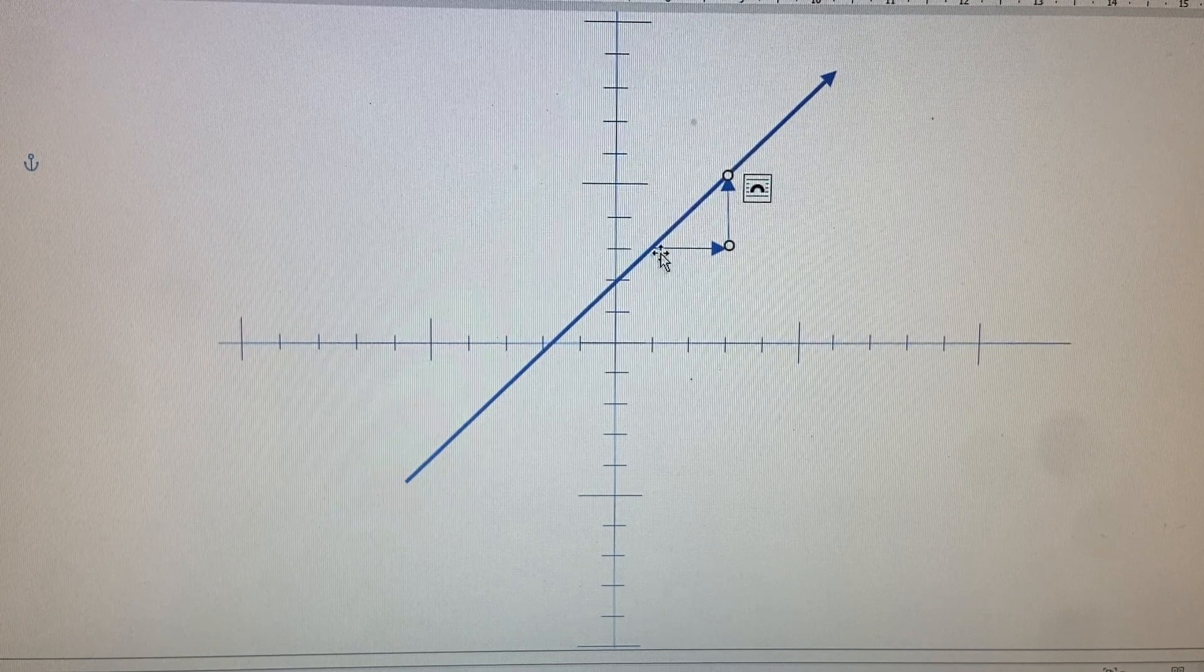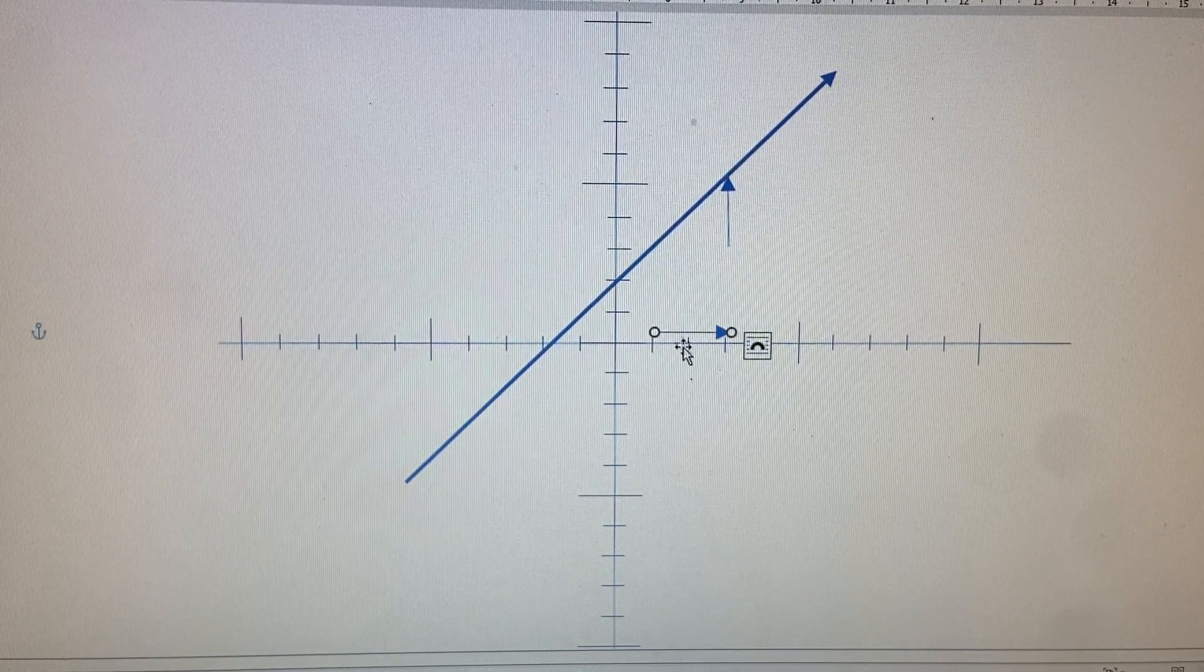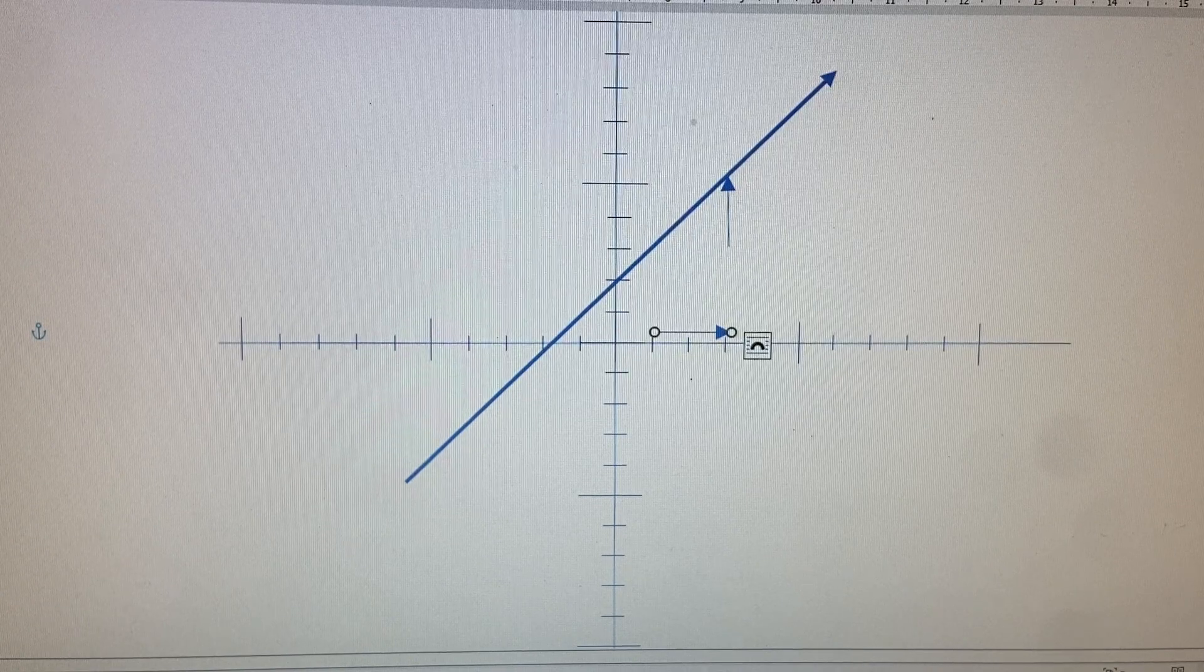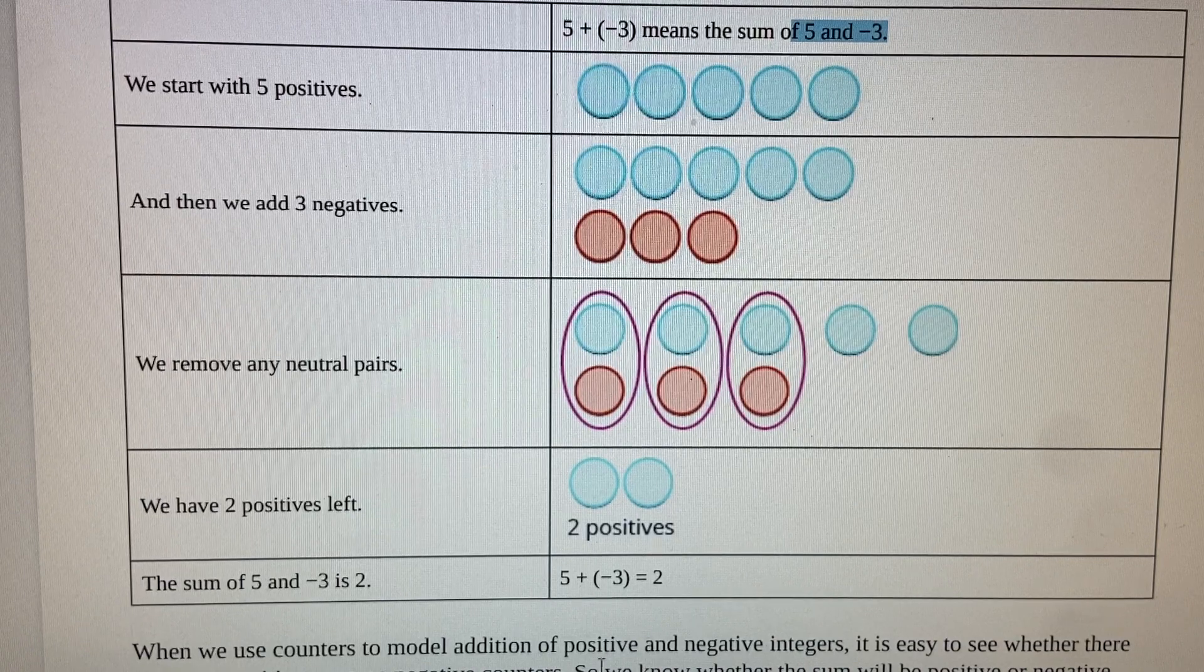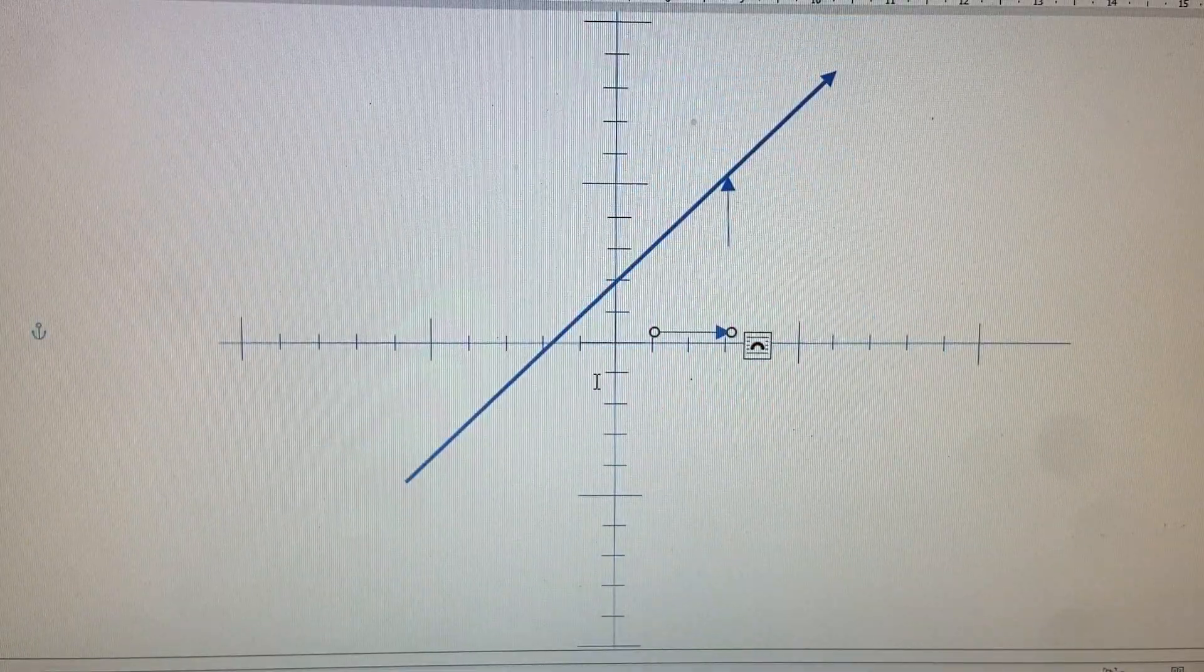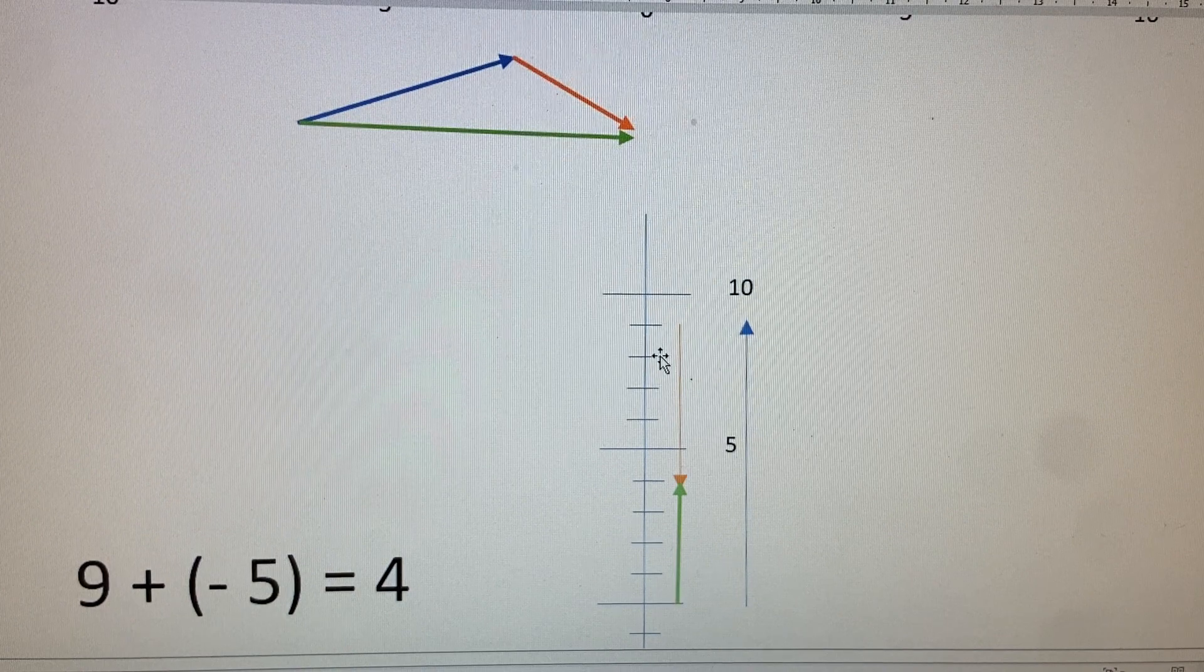And again, counting the length of these vectors one at a time, carefully. So that's the same idea as dealing with these counters or chips one at a time. And there is no, there could be cancelling here.